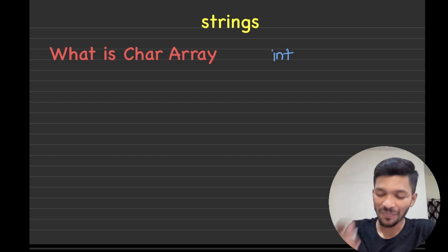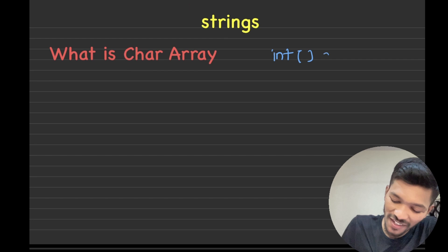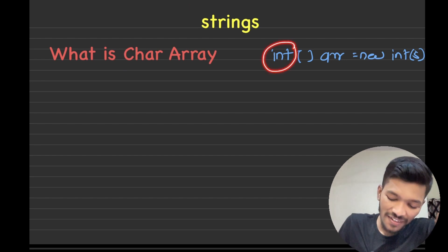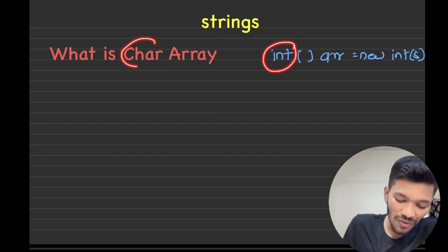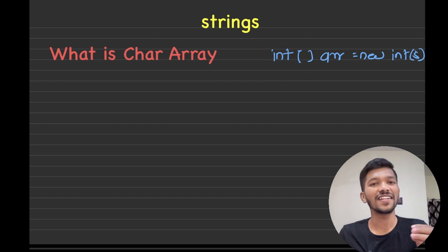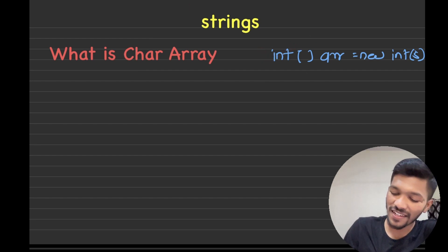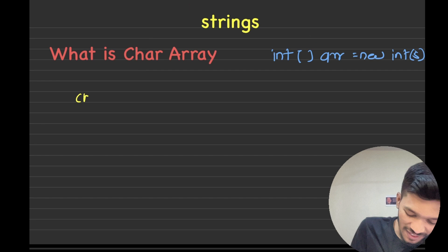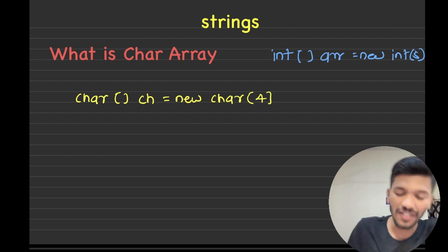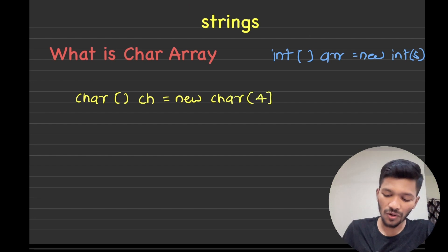Let's suppose we are declaring an array of integers. We simply declare the data type, square bracket, name of the array, and the size we want. Let's suppose I want a size of 5. This is how we declare the array in Java. But this is the array of integers, and what we are talking about is an array of characters. So in a similar way, I can also declare a character array. To declare a character array, I can write the data type as character, name the array as 'ch', and specify the size — let's say 4. This is what we call a character array.